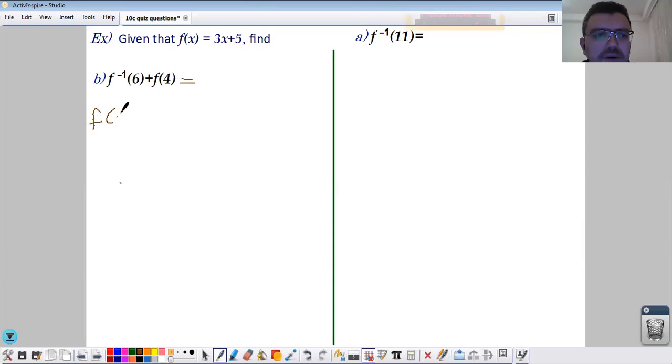Inside the function f you are going to place 4, you are going to replace x by 4. 3 times 4 plus 5, that makes 17. Okay, so now I want to find f inverse of 6.